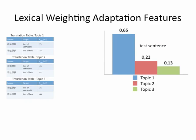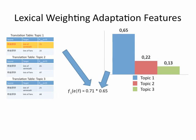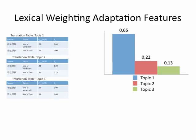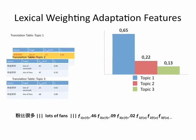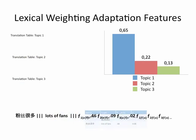So how do we use these to translate a particular document? We build up a feature vector using the per-document distribution over topics — that's the histogram on the right. We multiply the probability in the phrase translation table by the probability of the topic. So the first entry in Topic 1 says that 粉丝很多 translates to 'lots of vermicelli' with probability 0.71; we multiply that by 0.65, the probability of Topic 1 given the document. We do the same for every phrase pair in every topic, and for each individual phrase pair, we take the entry for each of the topics to build up a feature vector for our discriminative training.